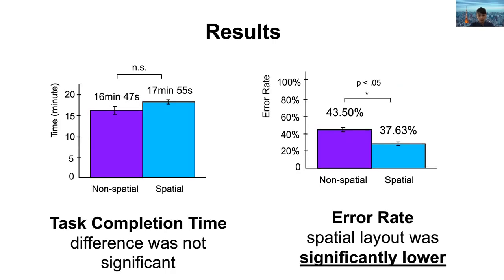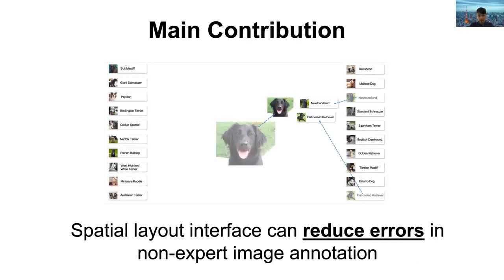We measured the time and error rate of the labeling task completed by participants. The results showed that task completion time difference was not significant between the non-spatial layout and the spatial layout interface. However, the error rate in the spatial layout labeling task was significantly lower than in the non-spatial layout task. The main contribution of this study is that our spatial layout interface can reduce error rates in non-expert image annotation without increasing cost — only by tweaking the user interface.